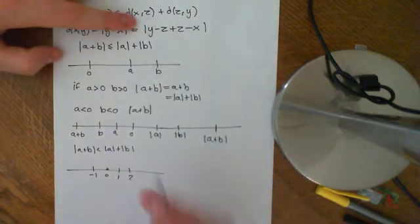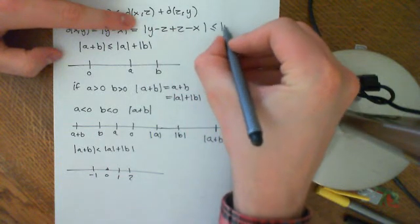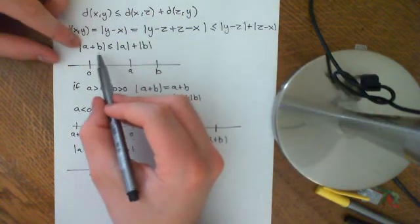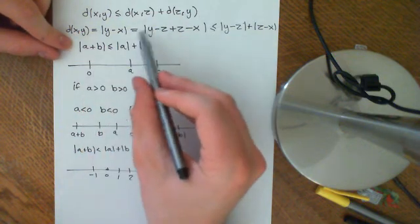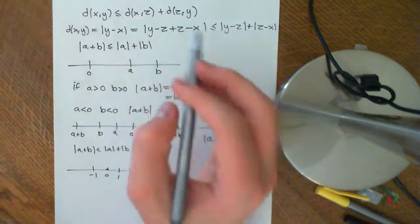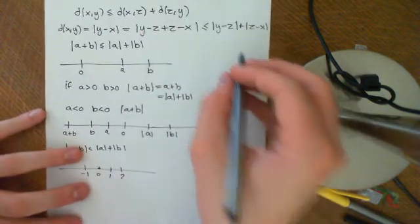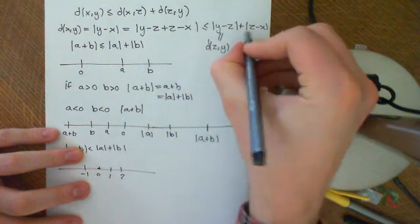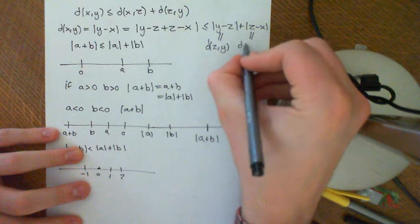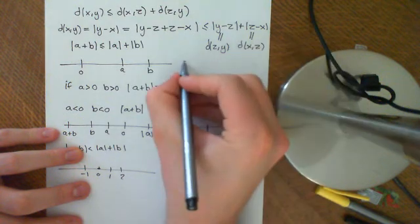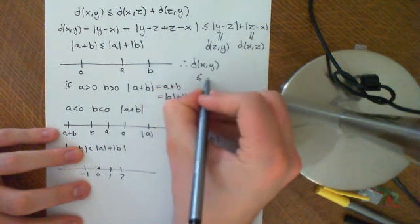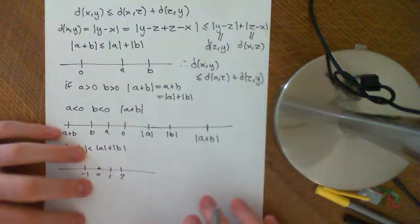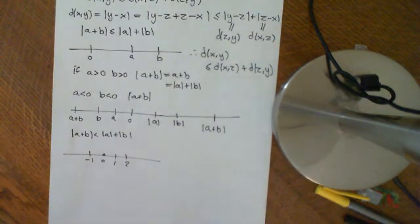We can apply this here and say that the modulus of (y minus z) plus (z minus x) is less than or equal to the modulus of y minus z plus the modulus of z minus x, where we view a as y minus z and b as z minus x. Applying the definition of the metric, the modulus of y minus z equals d(z, y), and the modulus of z minus x equals d(x, z). Therefore, d(x, y) ≤ d(x, z) + d(z, y). That gives us the triangle inequality, which holds true on the real numbers.